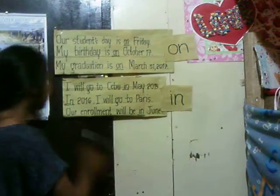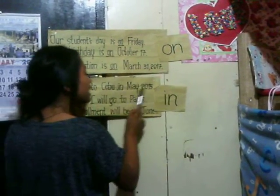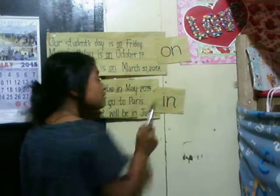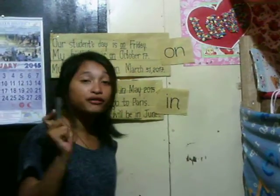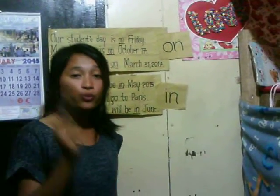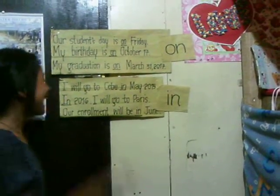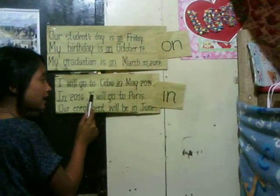And how about in? How can we use in correctly? We can use in correctly in three forms also. First, when we specify the month and the year. For example, I will go to Cebu in May 2015. May is the month and 2015 is the year, and in is the right form to use. For example, in 2016, I will go to Paris. 2016 is the year, and in is the right form to use.